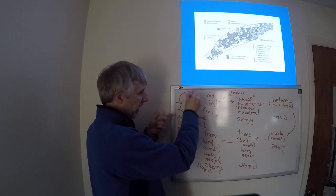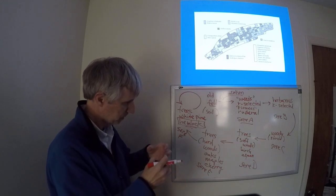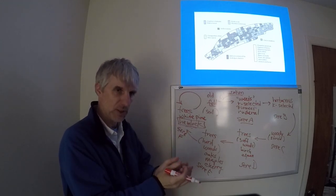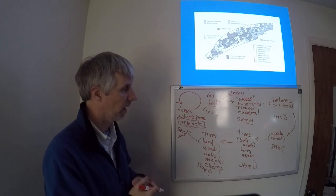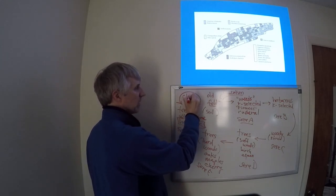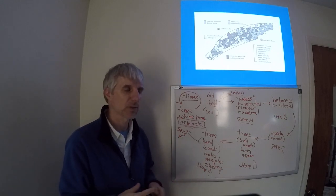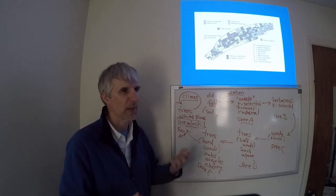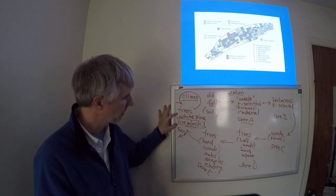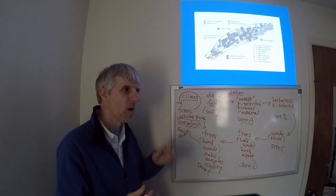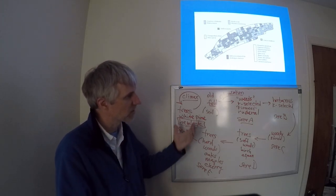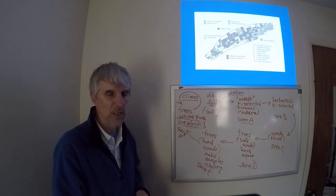So, this final sere is kind of the terminal stage of this old field succession model. And in fact, this final stage is referred to as the climax. Some people will call it the climax stage, or you can refer to these as climax species. They are the end result of this very elaborate successional process.